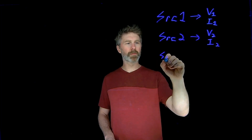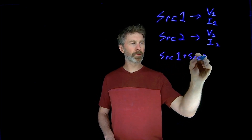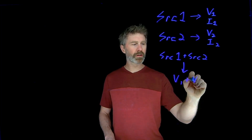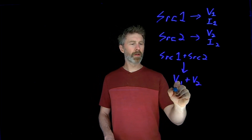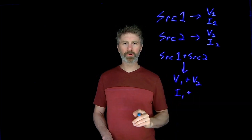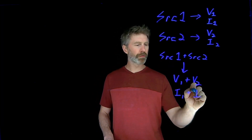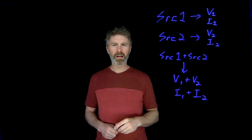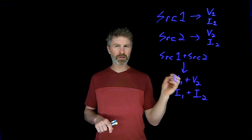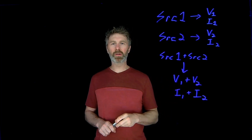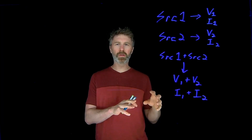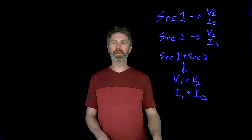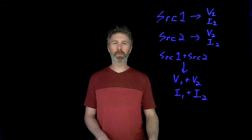But if you have both source one and source two in your circuit, the voltage across the element you're looking at will be equal to the voltage caused by just source one plus the voltage caused by just source two. Similarly, the current through that element will be the current due to source one plus the current due to source two. The general idea is you can analyze the circuit with only one source at a time — turn off the other sources, analyze with just one source, figure out voltages and currents, and then sum up the individual results to get the overall effect from all sources.